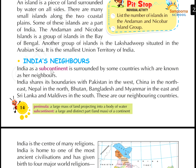India as a subcontinent is surrounded by some countries which are known as her neighbors. India shares its boundary with Pakistan in the west, China in the northeast, Nepal in the north, Bhutan, Bangladesh and Myanmar in the east, and Sri Lanka and Maldives in the south. These are the neighboring countries of India.